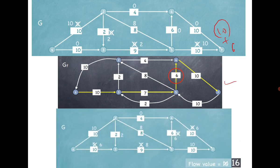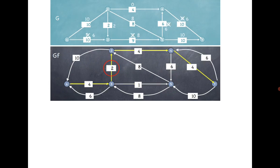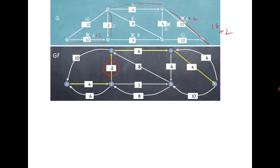After updating for the flow of 16, compute the residual graph again — please try it by yourself. This residual graph is interesting: it suggests an augmenting path with minimum capacity 2, giving flow 16 plus 2 equals 18. The path goes 6 plus 2, then 0 plus 2, then 6 plus 2. The only issue is that in the original graph there is no edge from 3 to 2, but the residual graph suggests a path from 3 to 2 with capacity 2.